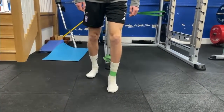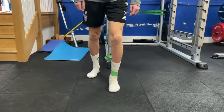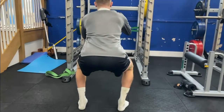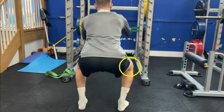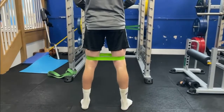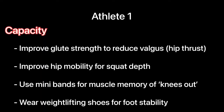When testing ankle mobility, we can see the knee does fall out along the line of the big toe. However, when using a mini band, it's clear to see that the athlete struggles in terms of potential glute strength, as the knee still falls inwards. The athlete was cued to push his knees out to see if he could keep up with the demand of the squat, clearly showing this is a capacity issue. We can improve glute strength to reduce knee valgus through exercises such as hip thrusts. Hip mobility also needs to be improved for squat depth to break below parallel. Mini bands can be used for muscle memory cueing knees out.